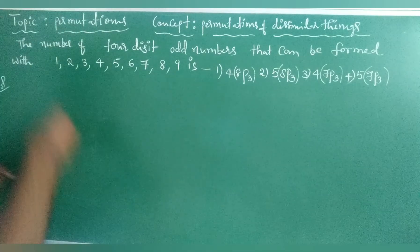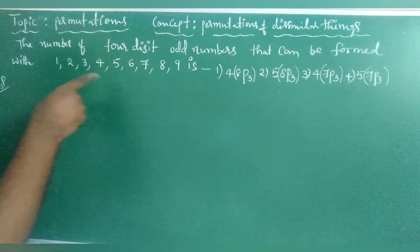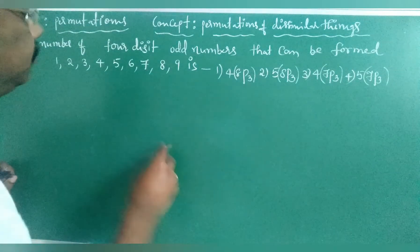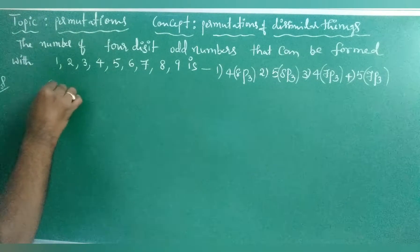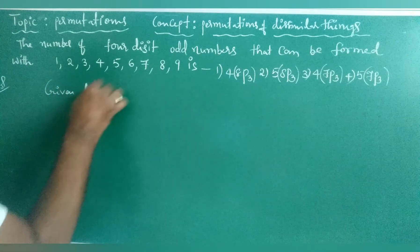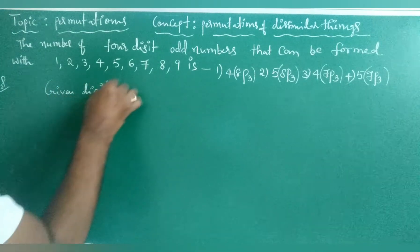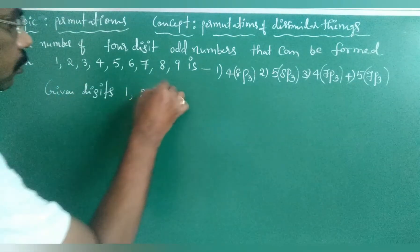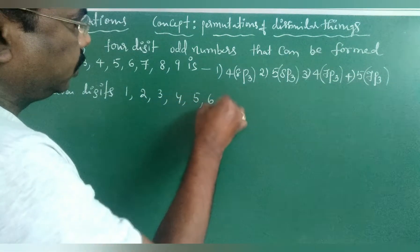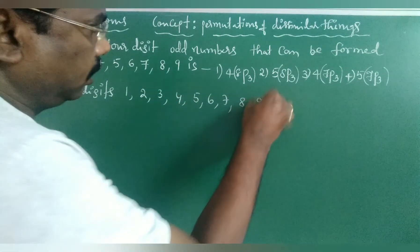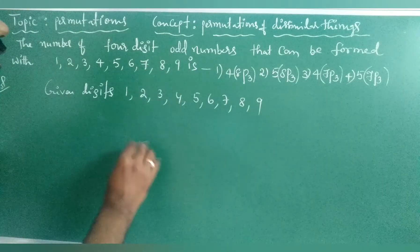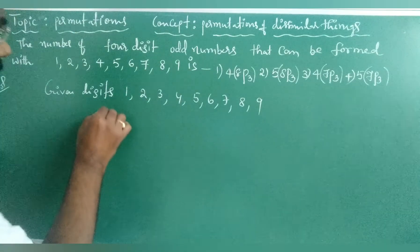The first problem: find the number of 4-digit odd numbers that can be formed with the digits 1, 2, 3, 4, 5, 6, 7, 8, 9. Given digits are 1 through 9.